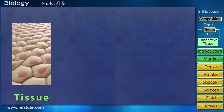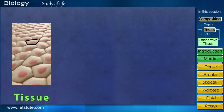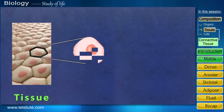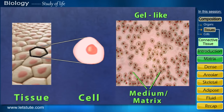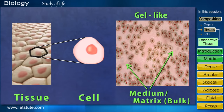As we know, a tissue is made up of cells. The cells that make up connective tissue are present in a gel-like substance called the medium or matrix, which forms the main bulk of the connective tissue.